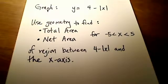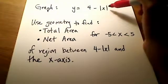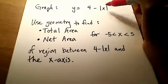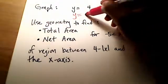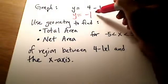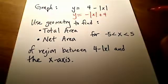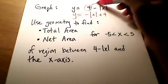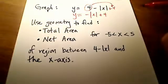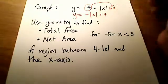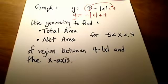Let me rewrite this equation. How about negative absolute value of x, and I'll put the plus 4 at the end. I'm just moving it to the back, which is really just a plus 4. What allows me to do that is the commutative property for addition.